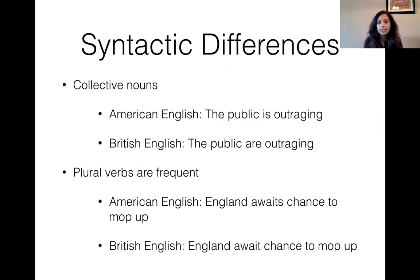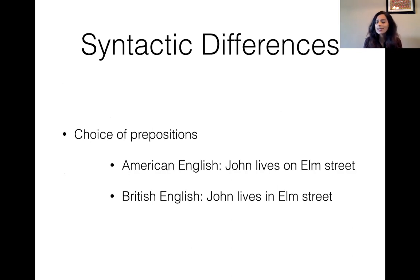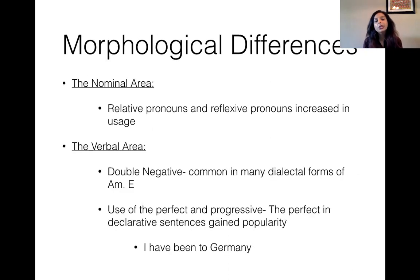Here are some syntactic differences. With collective nouns, American English has 'the public is outraged,' while British English has 'the public are outraged' — I still use the British English format because grammar is more difficult to change from how you were brought up. Plural verbs are also more frequent in British English: Americans say 'England awaits chance to mop up,' but British English says 'England await chance to mop up.' There's also choice of preposition: American English has 'John lives on Elm Street,' but British English says 'John lives in Elm Street.' In the nominal area, American English shows increased use of relative pronouns and reflexive pronouns, double negatives (common in certain dialectal forms), and use of perfect and progressive, such as 'I have been to Germany.'